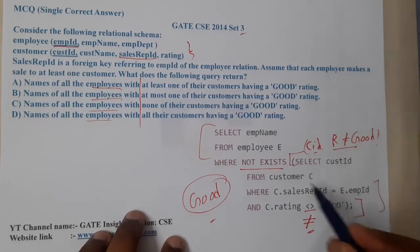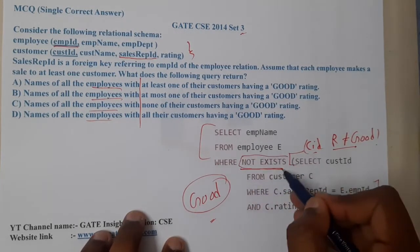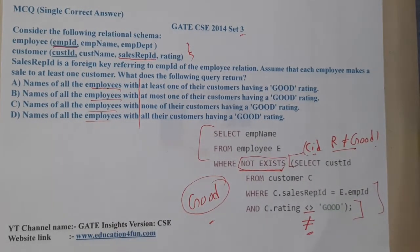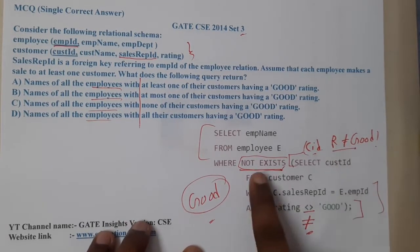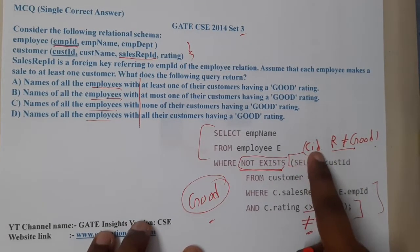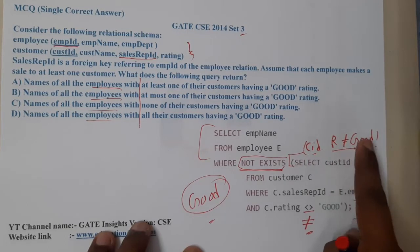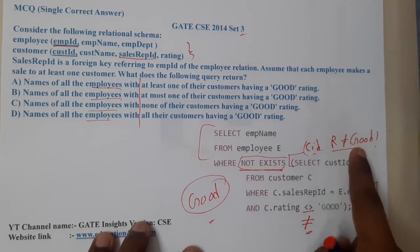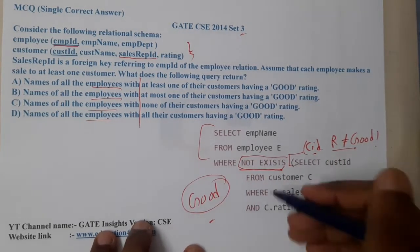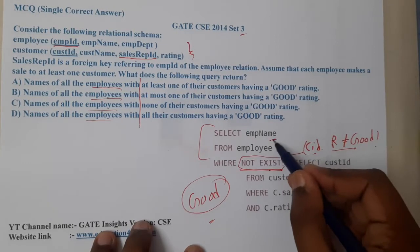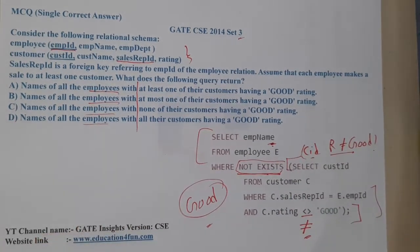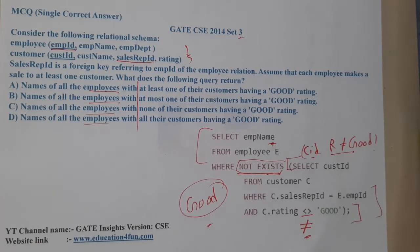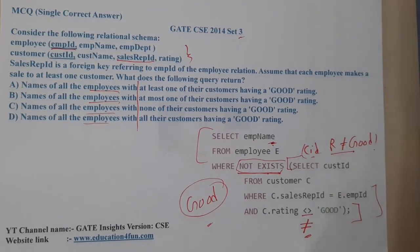Whenever NOT EXISTS is used with NOT EQUAL TO, it works in reverse. NOT EQUAL TO good indirectly results in EQUAL TO good. So the customer IDs that remain are those with good ratings, and those IDs are mapped to some employee. So the employee names we are printing are those whose customers gave good reviews.